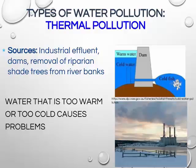Dams are another example of thermal pollution, as they typically discharge cold water from the bottom of the reservoir into the river downstream, suddenly giving stream organisms a much colder environment than they are used to. Thermal pollution, whether hot or cold, can kill or harm aquatic organisms.